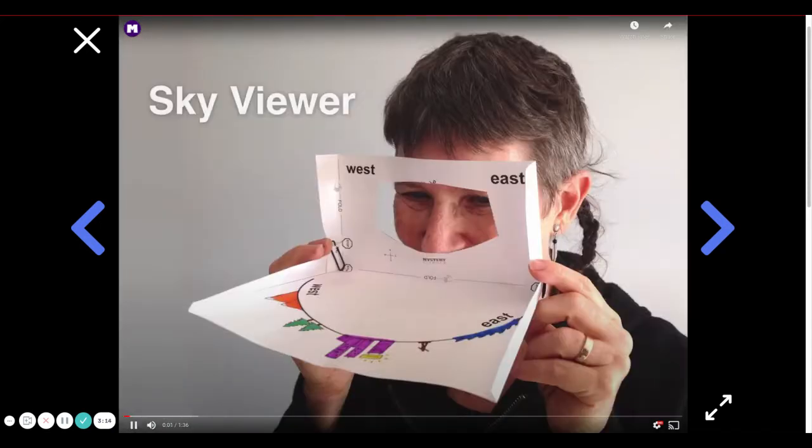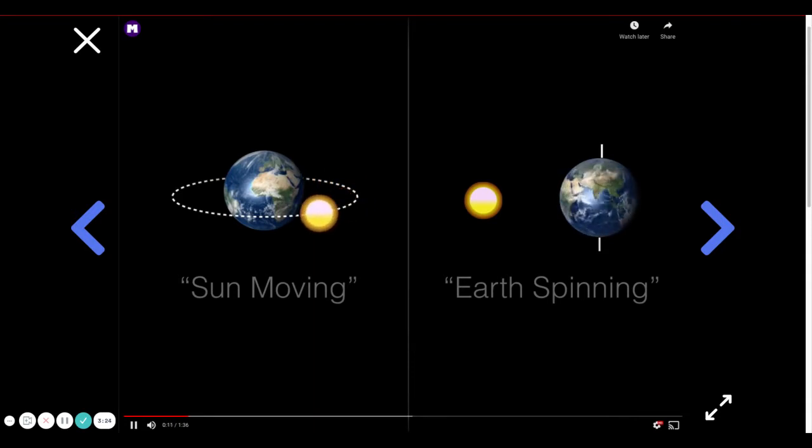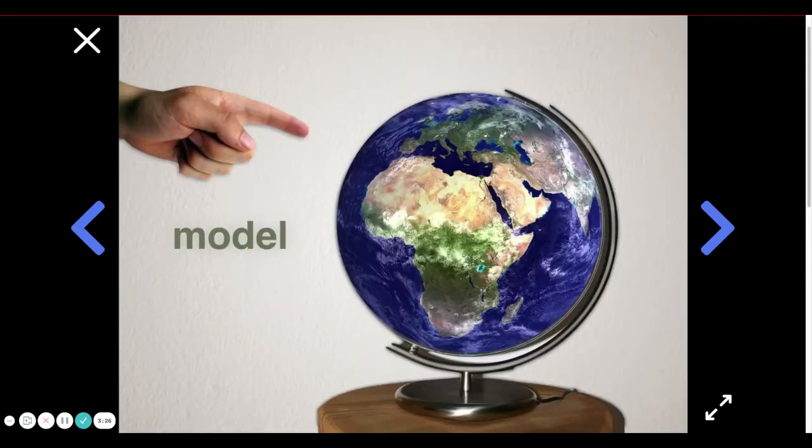In today's activity, you're going to make one of these, a sky viewer, and use it to explore these two different ideas to see how they can explain what we see in our sky each day. Now to do this, you're going to have to build a model. A model is something that scientists build when they want to test out a simpler version of the real thing. So for example, a globe is a model of the earth. Models are useful when you want to understand something really big, but you need something that's just your size.